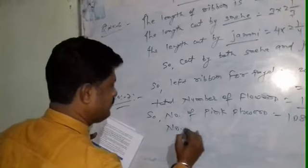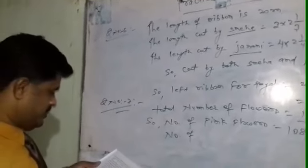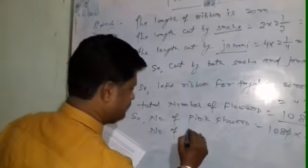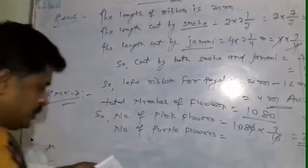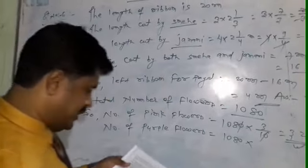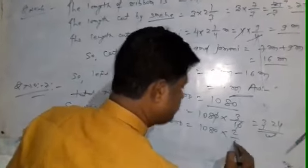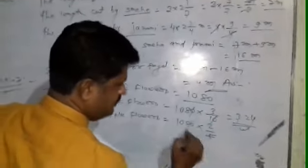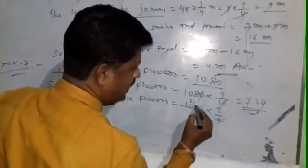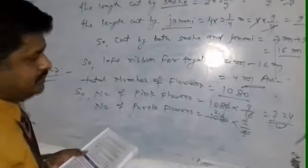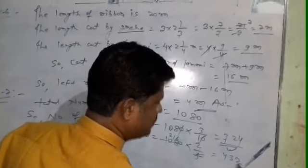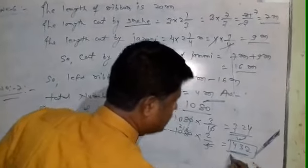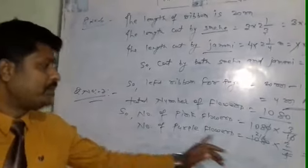Now, number of purple flowers equals 1080 multiplied by 2 by 5. Calculating: 5 twos are 10, 5 ones are 5, 5 sixes are 30. So we get four hundred thirty two flowers of purple color.